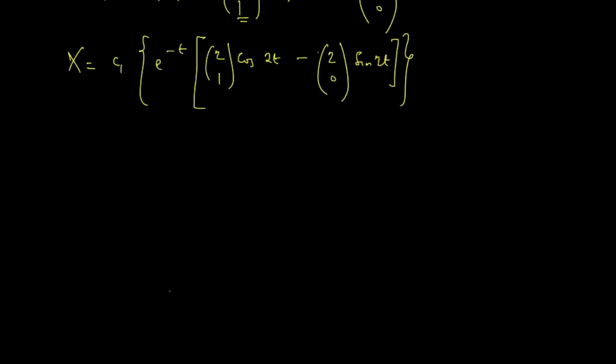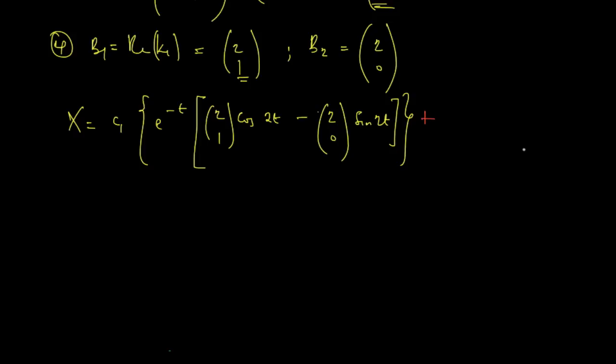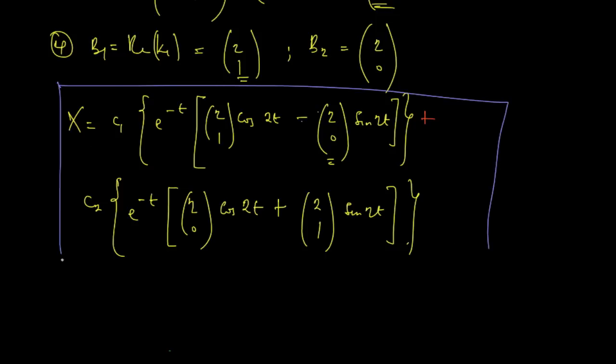Then plus c2, all into e to the power of negative t into 2, 0. So this time around, 2, 0 starts. Then cosine of 2t. Then instead of negative sine, we write plus sine. Then 2, 1, sine of 2t. So this is the general solution of the homogeneous system that was post. That's the general solution.